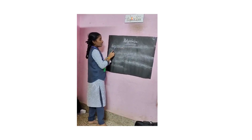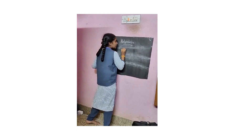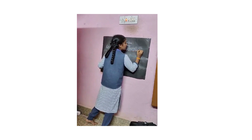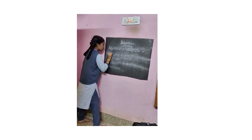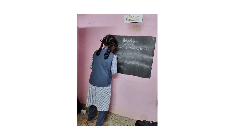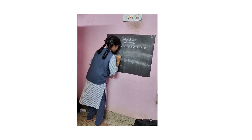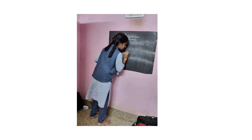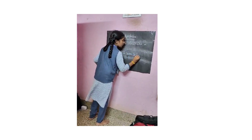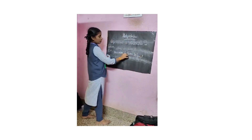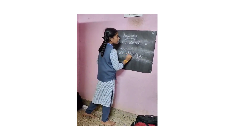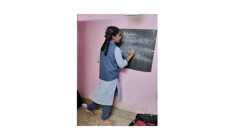Today we are talking about Adjective. Adjective is describing a noun. For example, the Rose is beautiful. Rose is a noun. Beautiful describes the noun. So, beautiful is your Adjective.